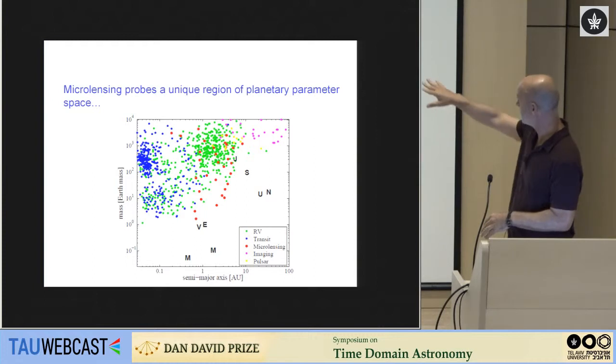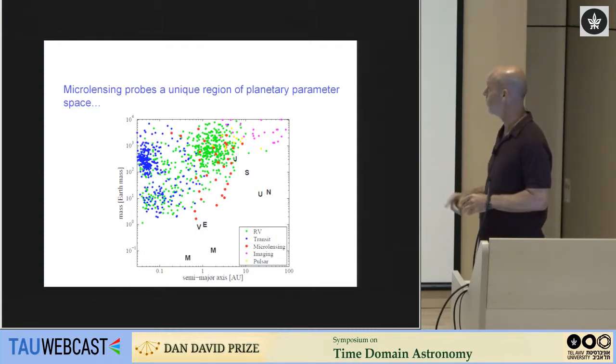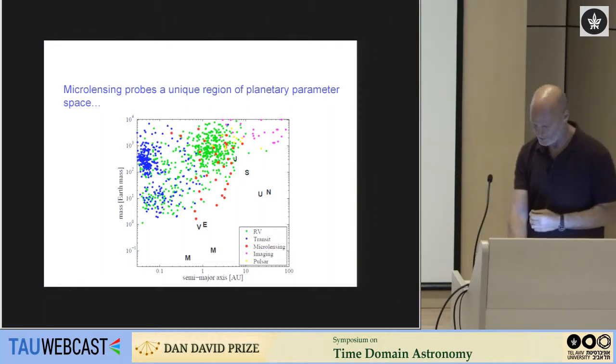One of the interesting things that you see from this plot is that most of the known extrasolar planets are still in a rather different part of parameter space from the planets in our own solar system. With the exclusion maybe of Jupiter that's inside that cloud. Another thing you can see is that the red points, which are the microlensing planets that have been discovered, are probably the closest ones to the planets in our solar system.